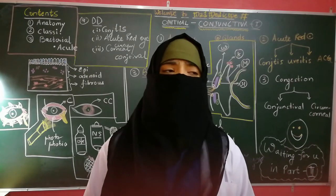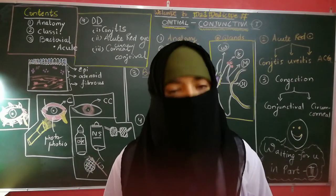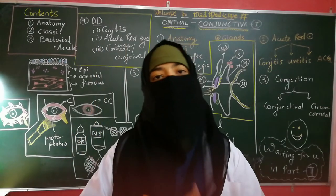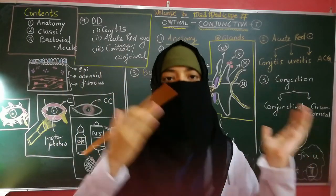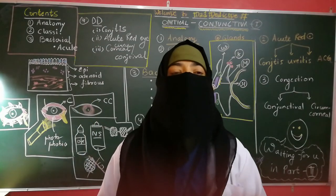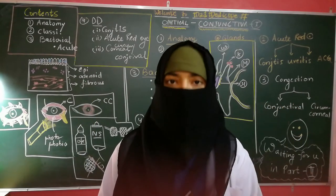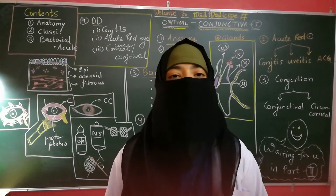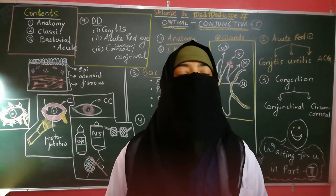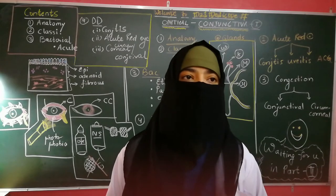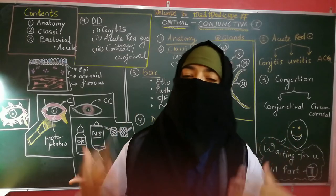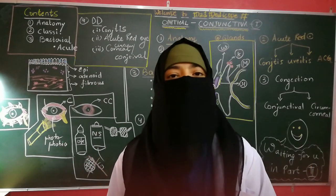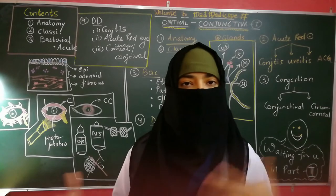Depending upon the cause, conjunctivitis can be divided into two broad categories: infectious and allergic. In the infectious category, it could be bacterial, viral, chlamydeal, granulomatous, or ophthalmia neonatorum. In the allergic category, there are various types such as simple allergic conjunctivitis, which could be seasonal or perennial.